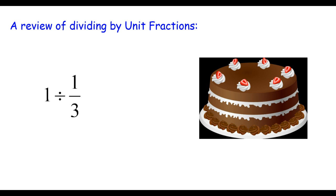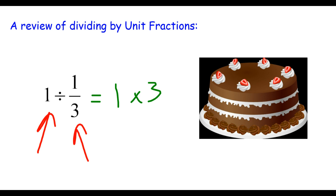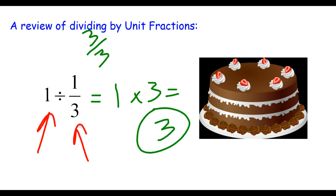Let's say we have a cake and we want to split it into thirds. The question is: how many thirds of a cake can we make out of one cake? One cake being made out of groups of one-third of a cake. Since there are three thirds in one, it takes three thirds to make one cake. Easy example.